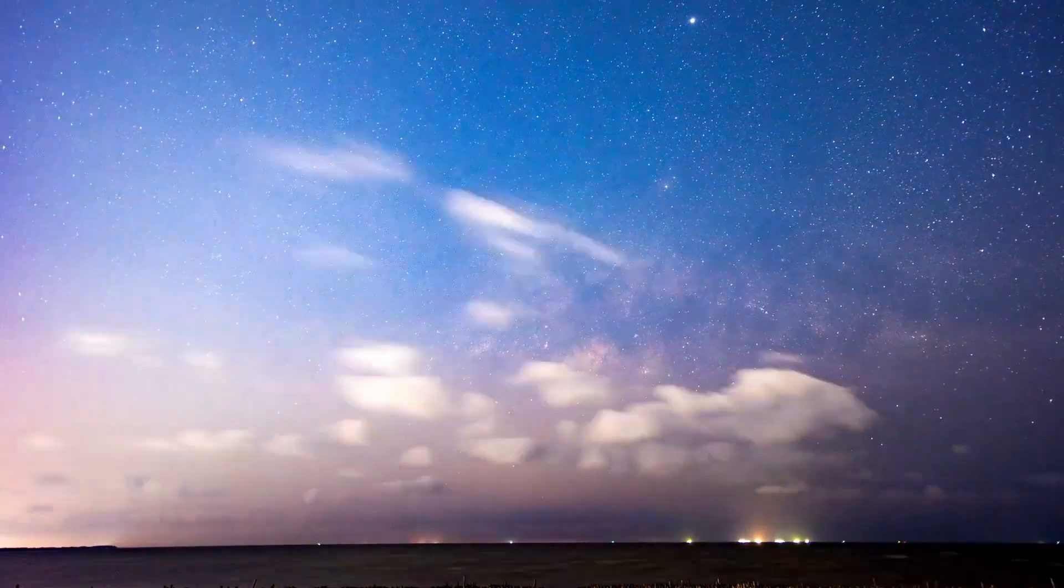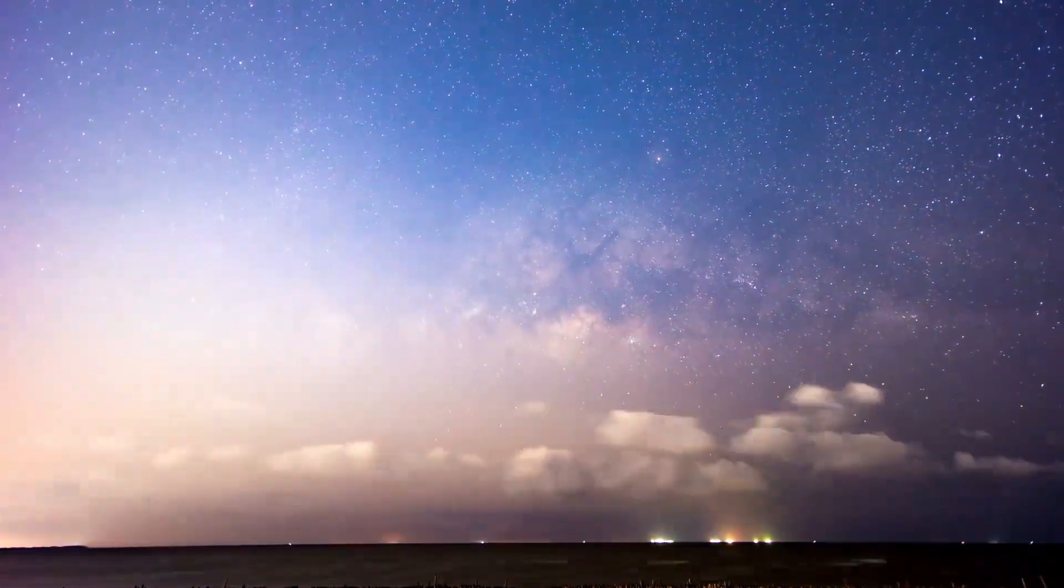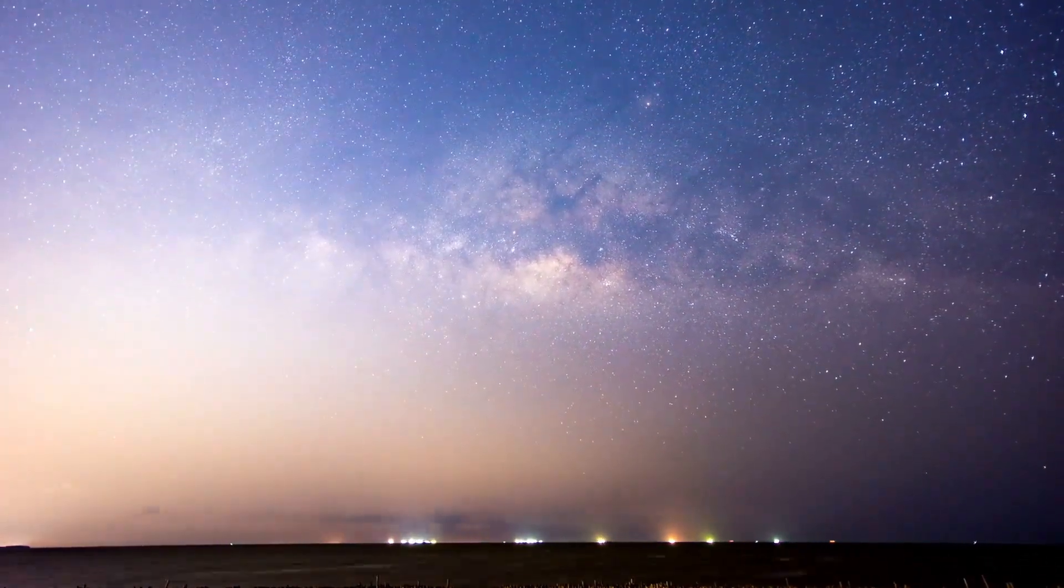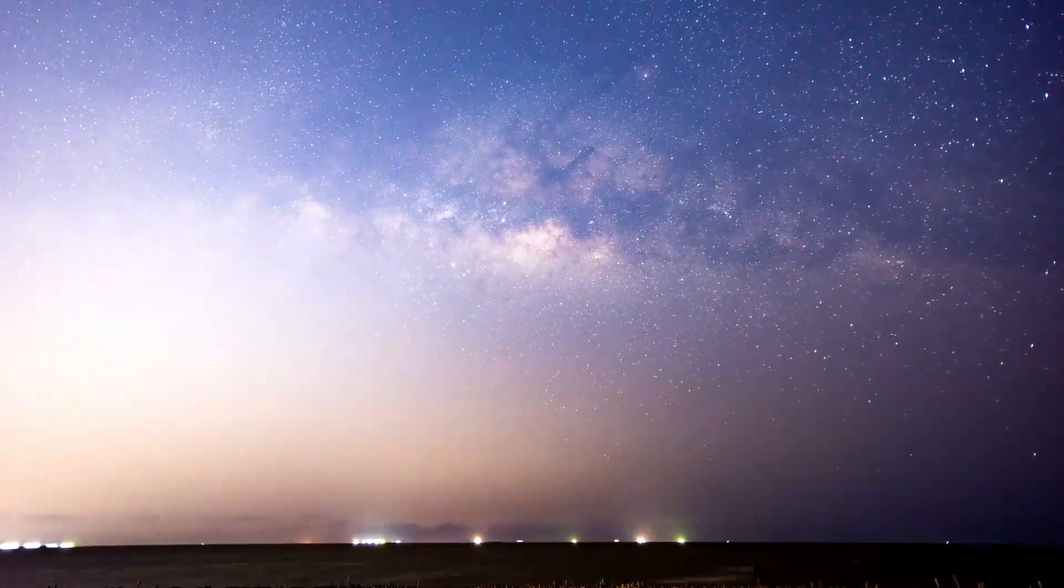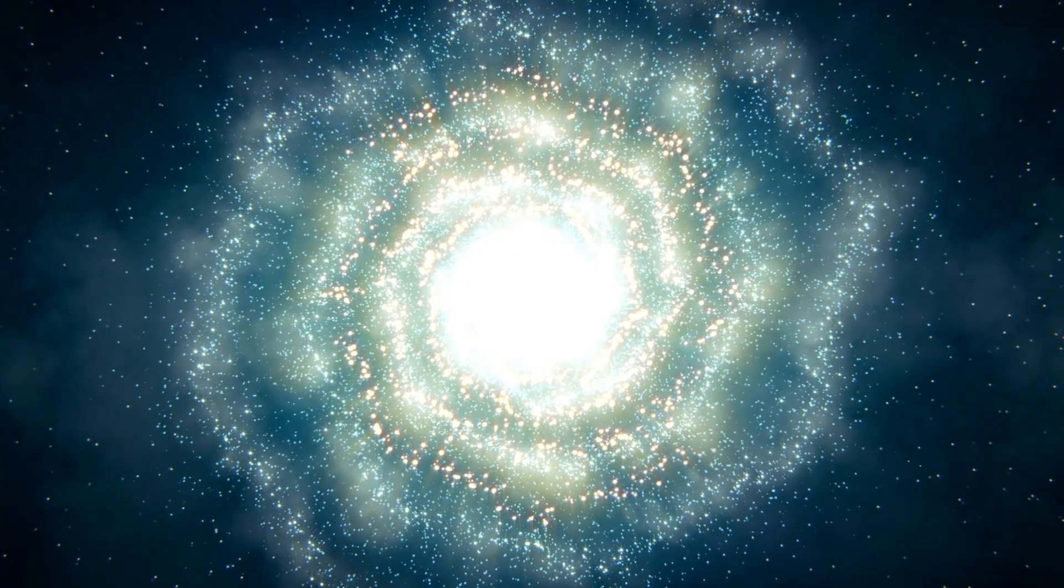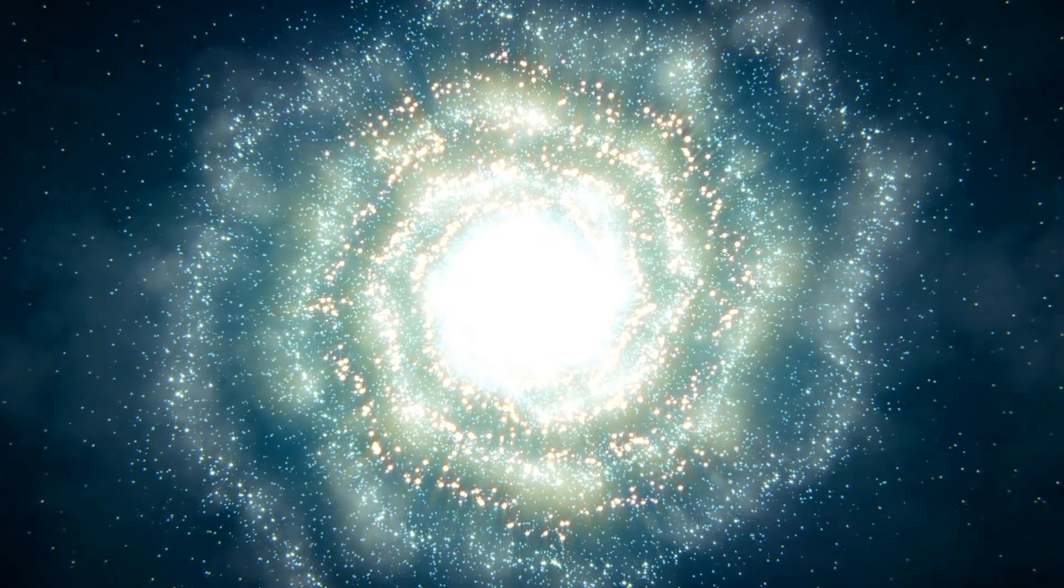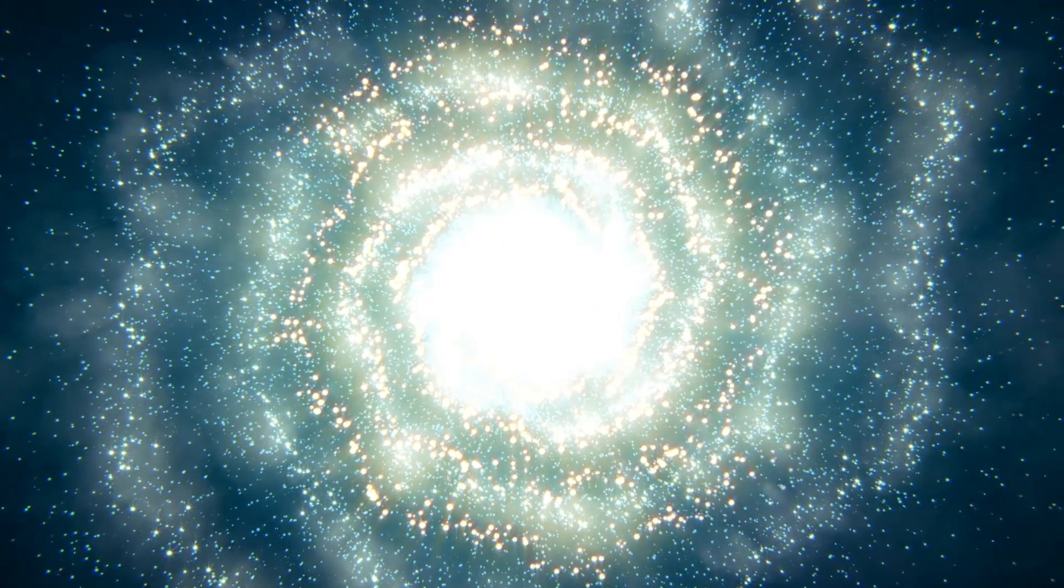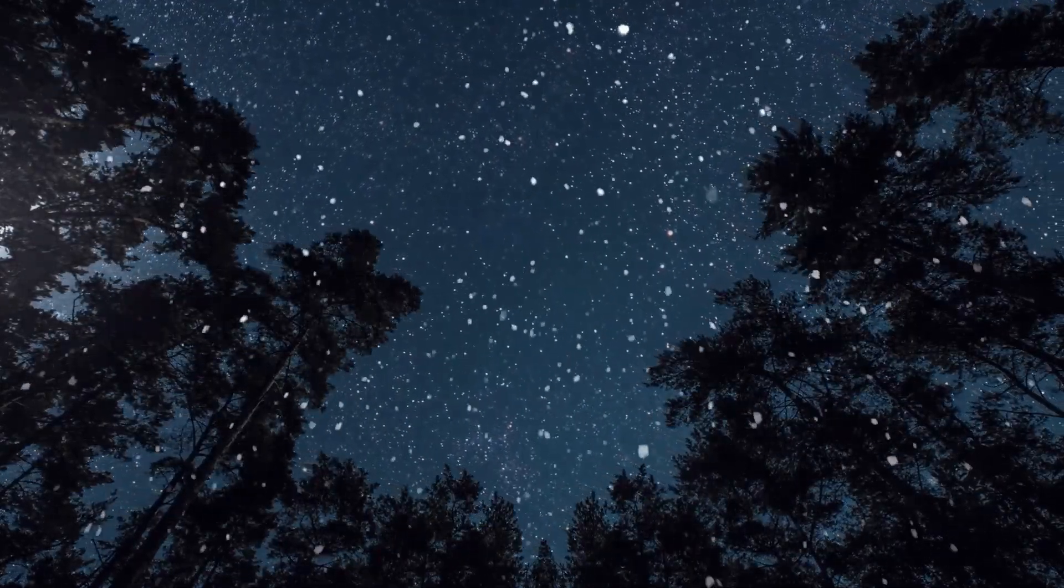If a supernova occurred in our cosmic neighborhood closer than 30 light-years, things could get dicey. Although Betelgeuse's supernova is not projected to directly threaten life on Earth, there could be certain atmospheric impacts. The explosion would emit a surge of ultraviolet radiation, potentially leading to a temporary reduction in the ozone layer.